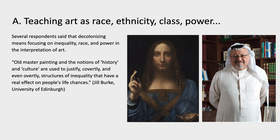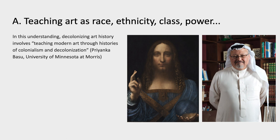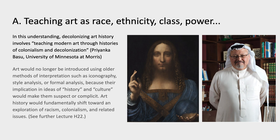Old master painting and the notions of history and culture, according to one of the respondents Jill Burke, are used to justify — covertly and even overtly — structures of inequality that have a real effect on people's life chances. She compares Leonardo's Salvator Mundi painting, sold for 450 million dollars in 2017, to the murder the next year of the journalist Jamal Khashoggi, and asks if the one makes up for the other. In this understanding, decolonizing art history involves teaching modern art through histories of colonialism and decolonization. Art would no longer be introduced using older methods like iconography, style analysis, or formal analysis. Art history would fundamentally shift toward an exploration of racism, colonialism, and related issues. This is probably the most common strategy currently used in the teaching of art history.